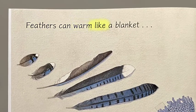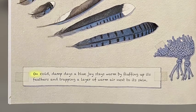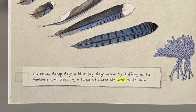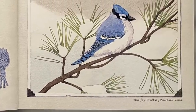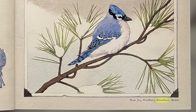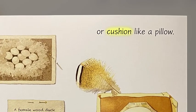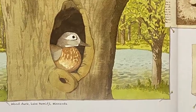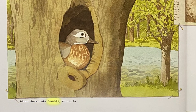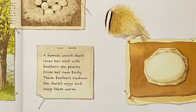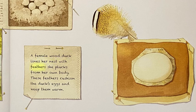Feathers can warm like a blanket. On cold, damp days, a blue jay stays warm by fluffing up its feathers and trapping a layer of warm air next to its skin. Or cushion like a pillow. A female wood duck lines her nest with feathers she plucks from her own body. These feathers cushion the duck's eggs and keep them warm.